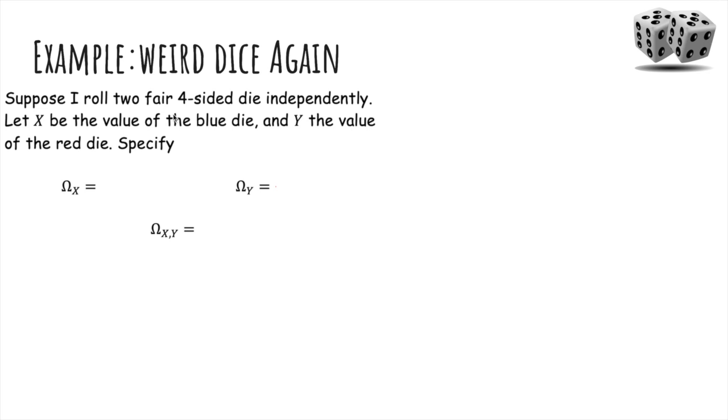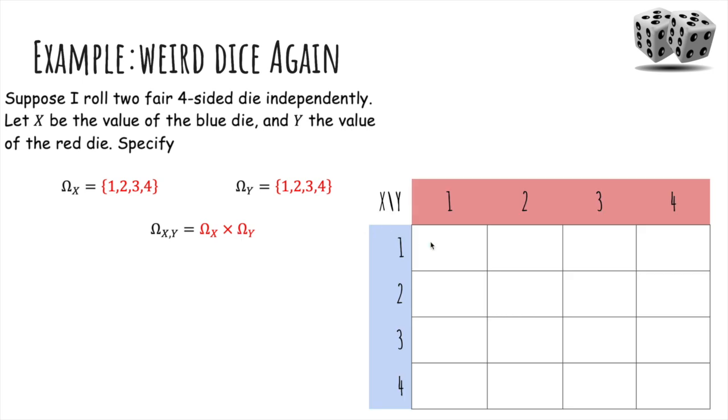Now, suppose I roll two fair four-sided die independently. Let X be the value of the blue die and Y the value of the red die. Specify the ranges and the joint range. The range of each one is just 1 through 4, but the range of (X,Y) is just the cross product, the Cartesian product, which is the set of all ordered pairs.